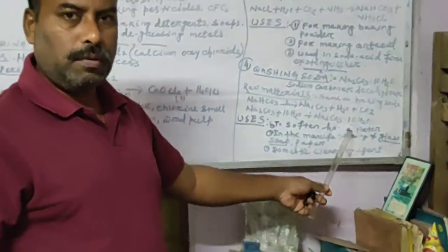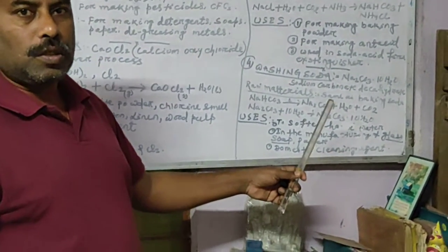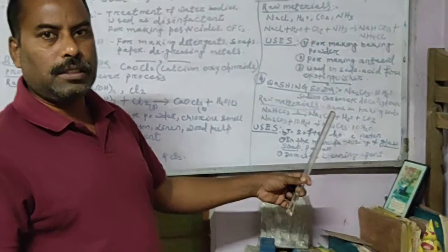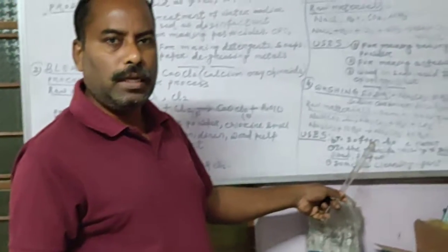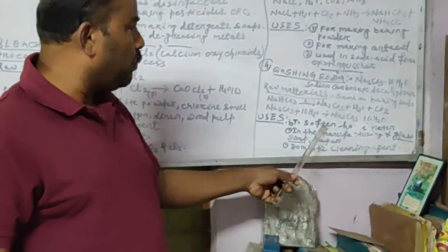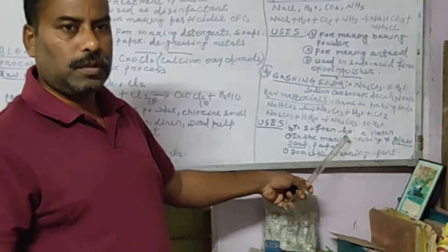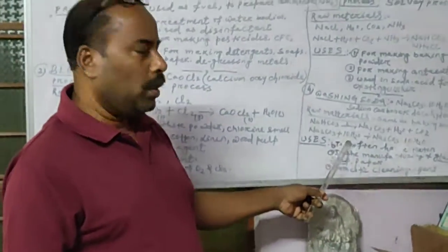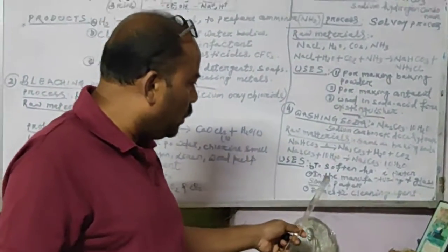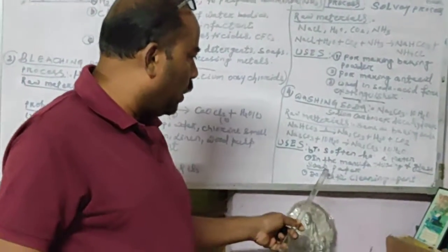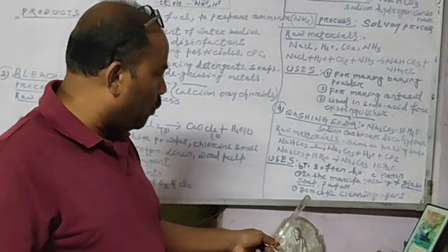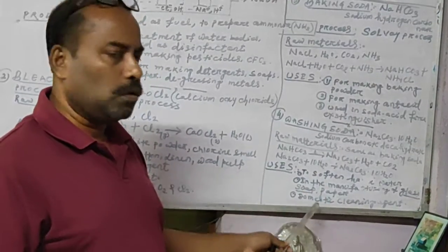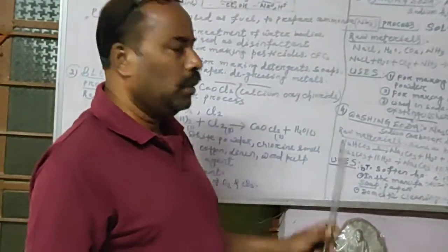The uses of washing soda include softening hard water. Hard water contains dissolved salts like magnesium and calcium chloride and is not suitable for cleaning, washing, or laboratory use. Washing soda makes it soft. It is also used in manufacturing glass, soap, and paper, and for domestic cleaning purposes.